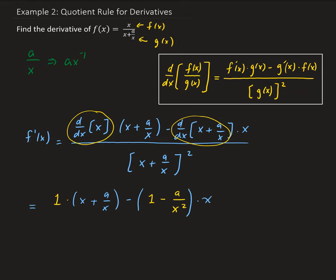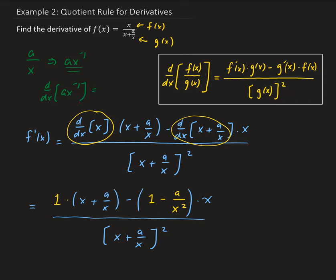All this is divided by x plus a over x squared. Just to clarify: we have a over x, which equals a times x to the negative 1. When we take the derivative of that using the power rule, a is a constant, so we get a times x to the minus 2, which is the same as a over x squared.